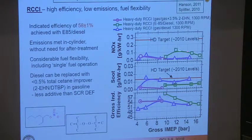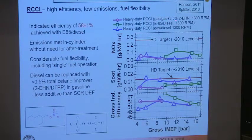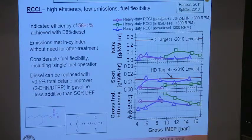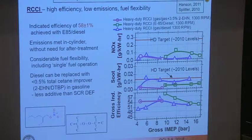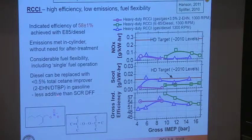With E85 and diesel we again achieved low soot and low NOx. We then thought: why use diesel fuel at all? Many people have concerns about having two fuels. So we ran with gasoline and injected gasoline doped with a cetane improver — 3.5% 2-ethyl hexyl nitrate blended in with gasoline. The results show you don't really have to have diesel; all you need is a highly reactive fuel to condition the low-reactivity fuel locally in the combustion chamber. The amount of cetane improver used is actually less additive than needed for SCR diesel exhaust fluid to meet emissions regulations.